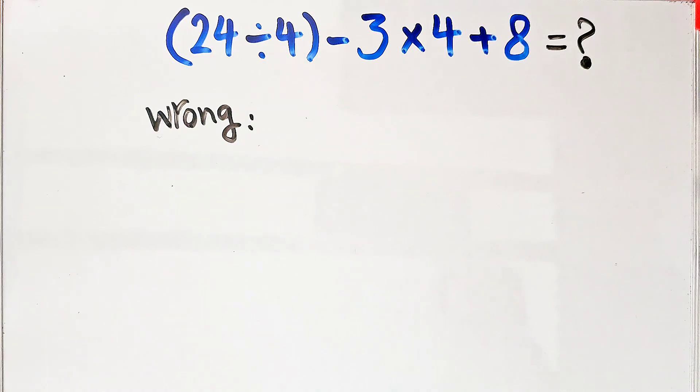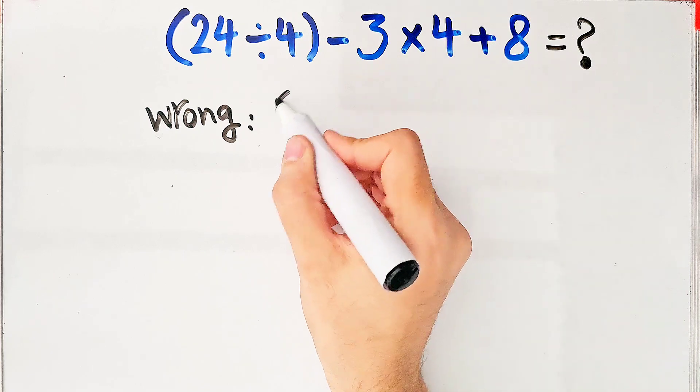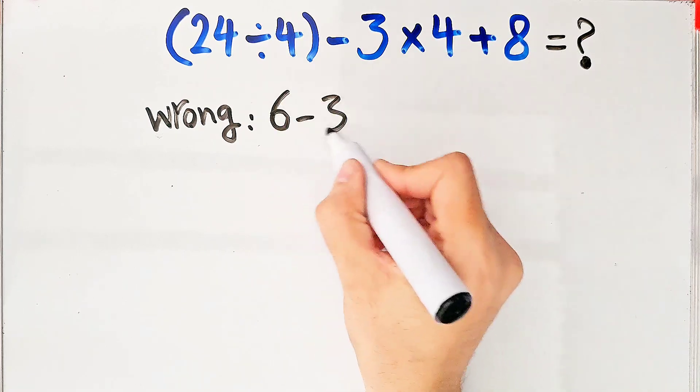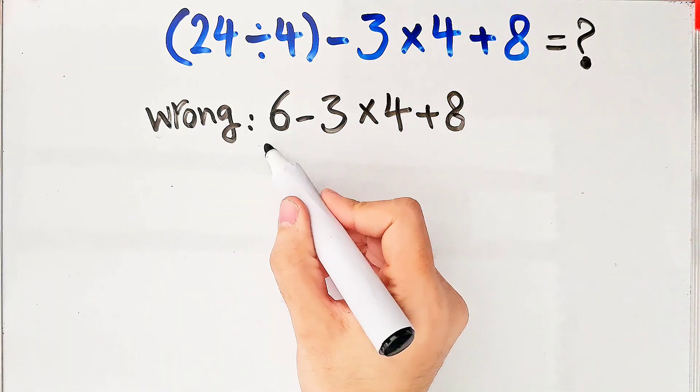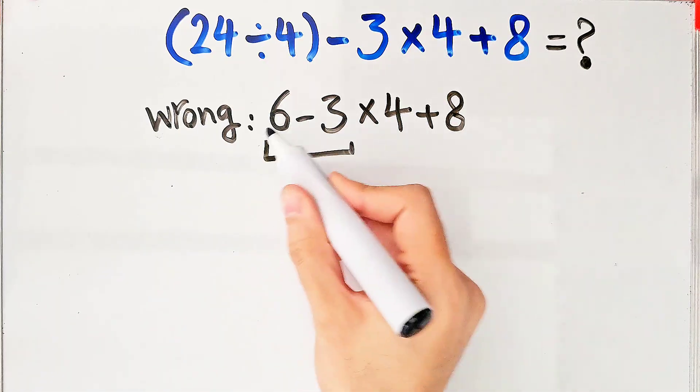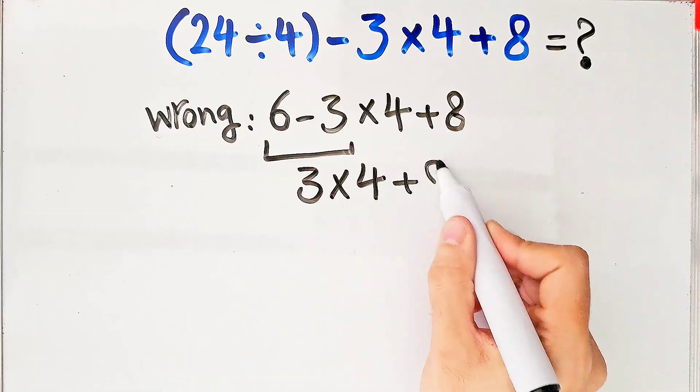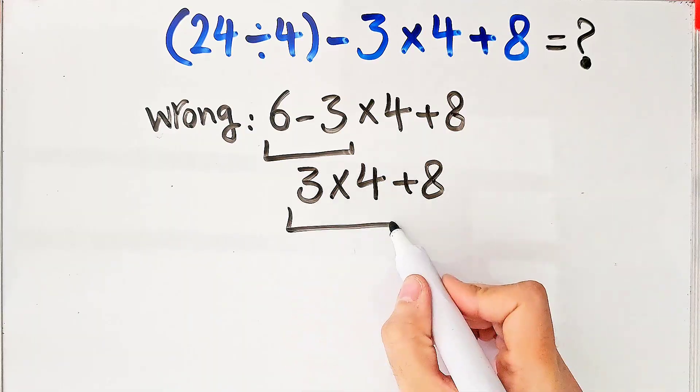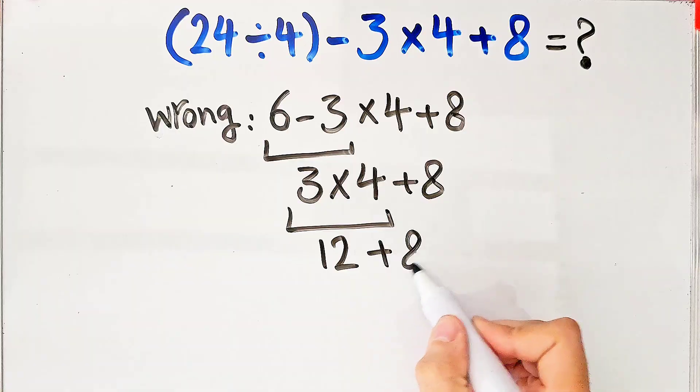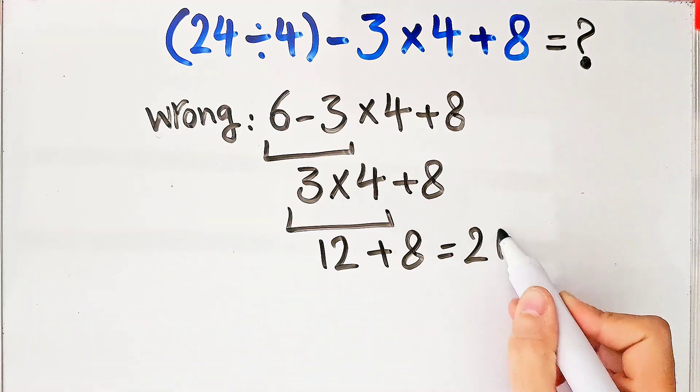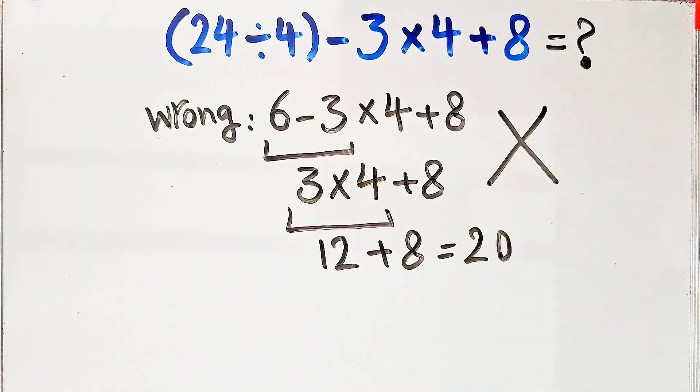For example, some people solve this question like this: 24 divided by 4 equals 6. 6 minus 3 times 4, then plus 8. 6 minus 3 equals 3. 3 times 4, then plus 8. 3 times 4 equals 12, and 12 plus 8 equals 20. They say the final answer of this question equals 20, but this answer is definitely wrong.